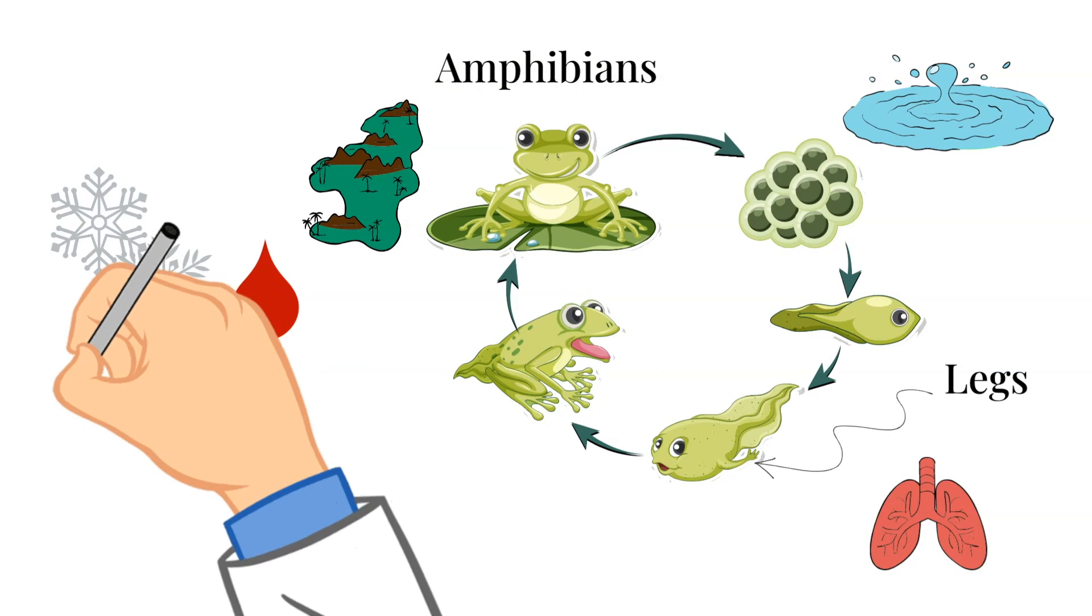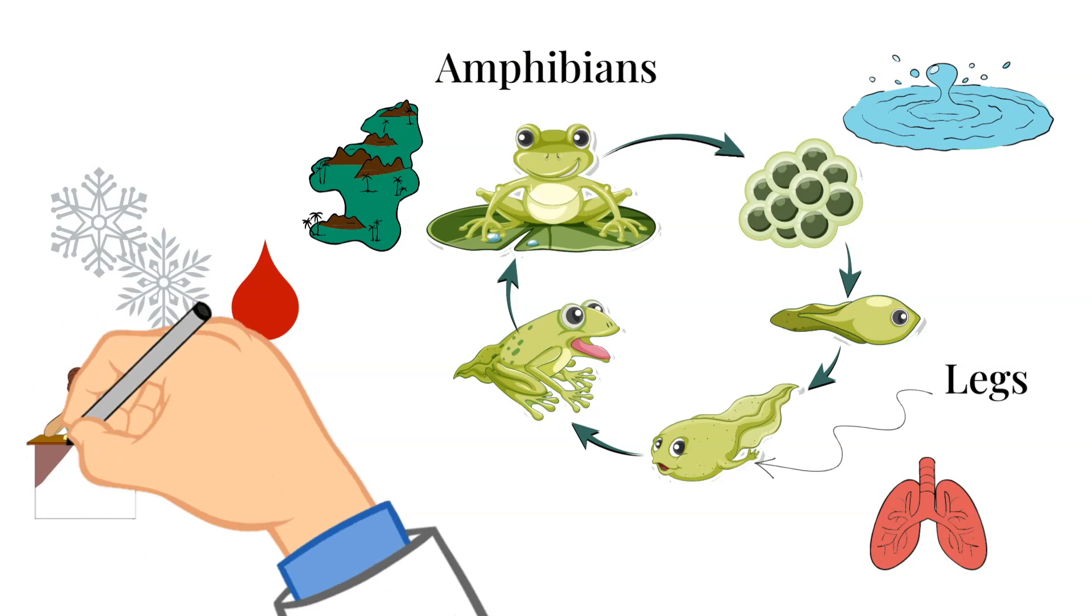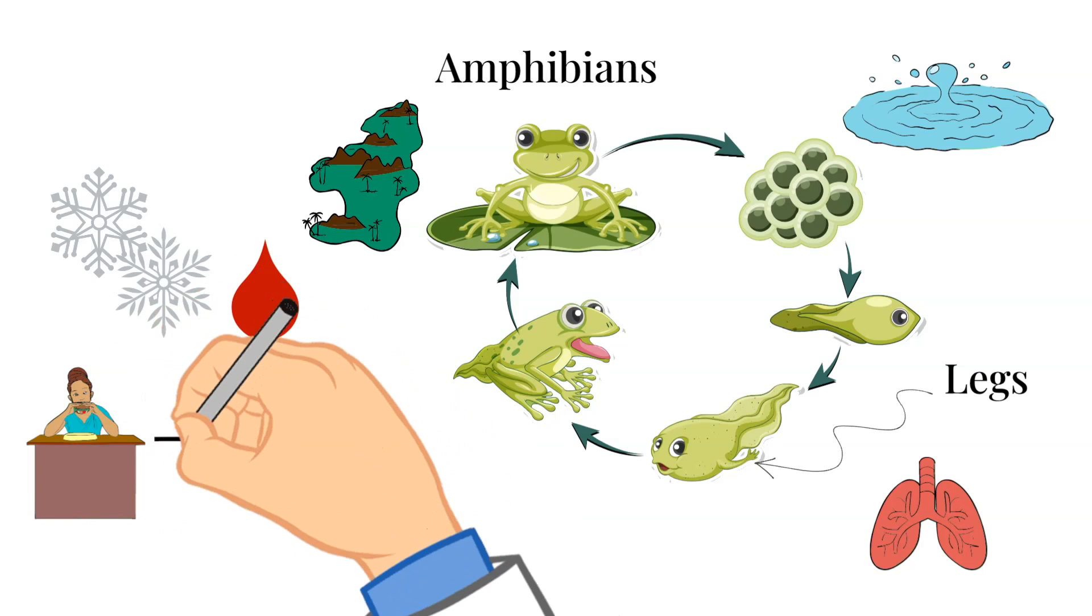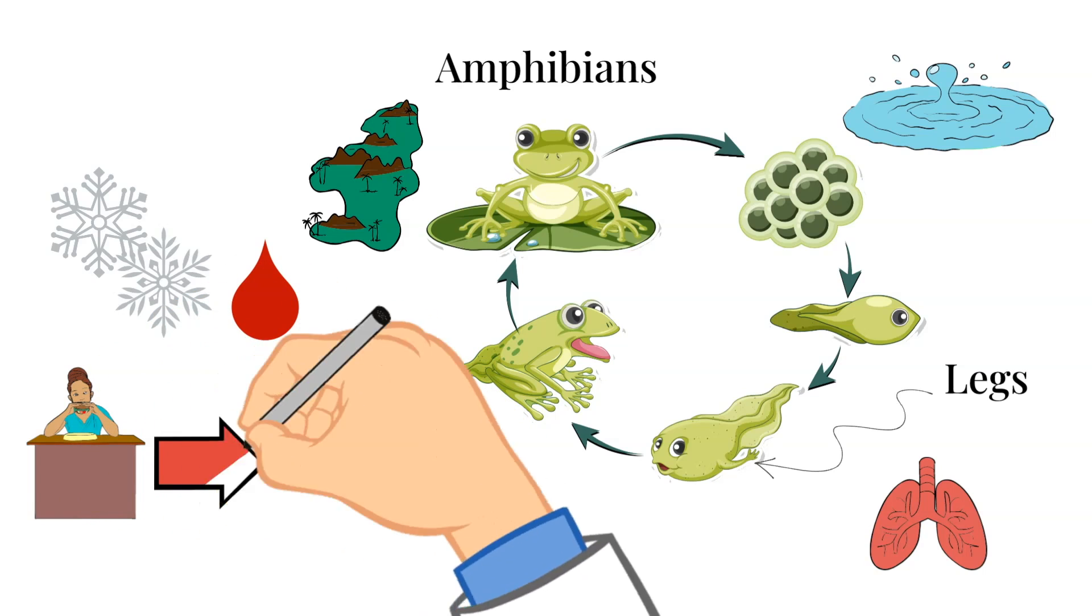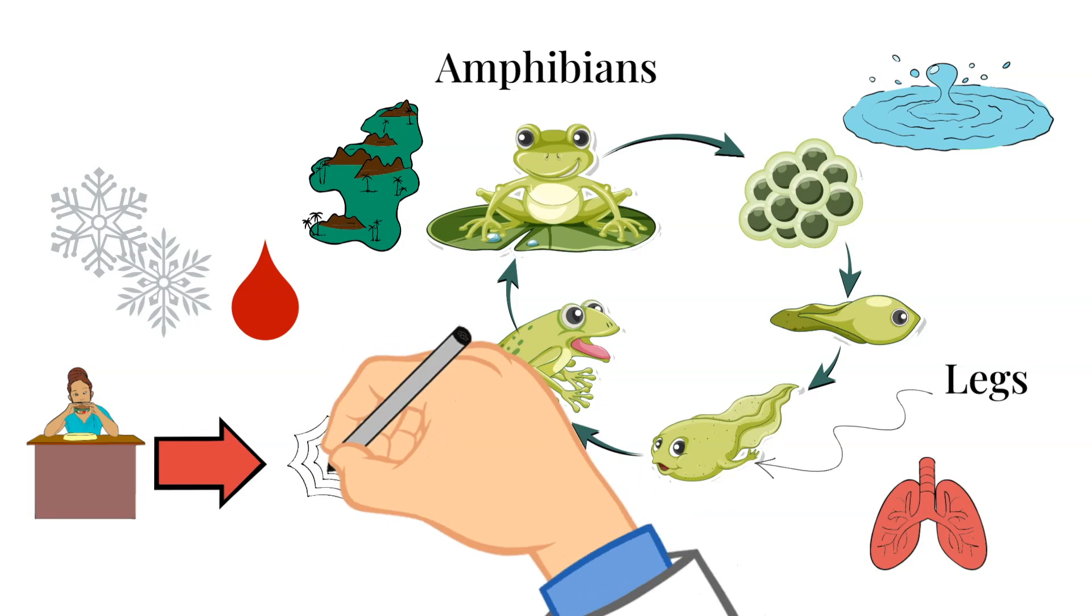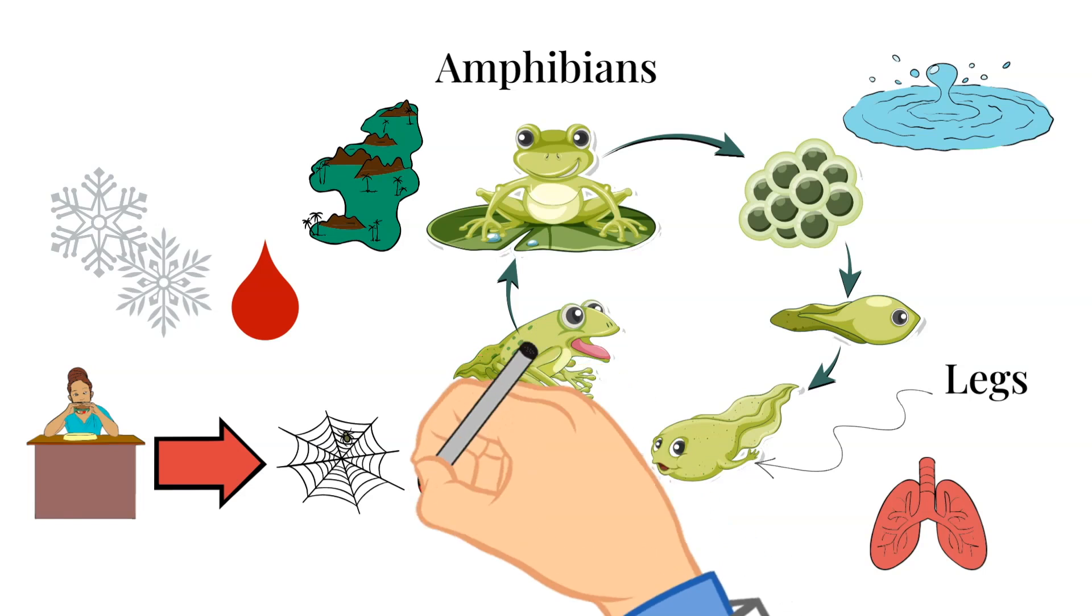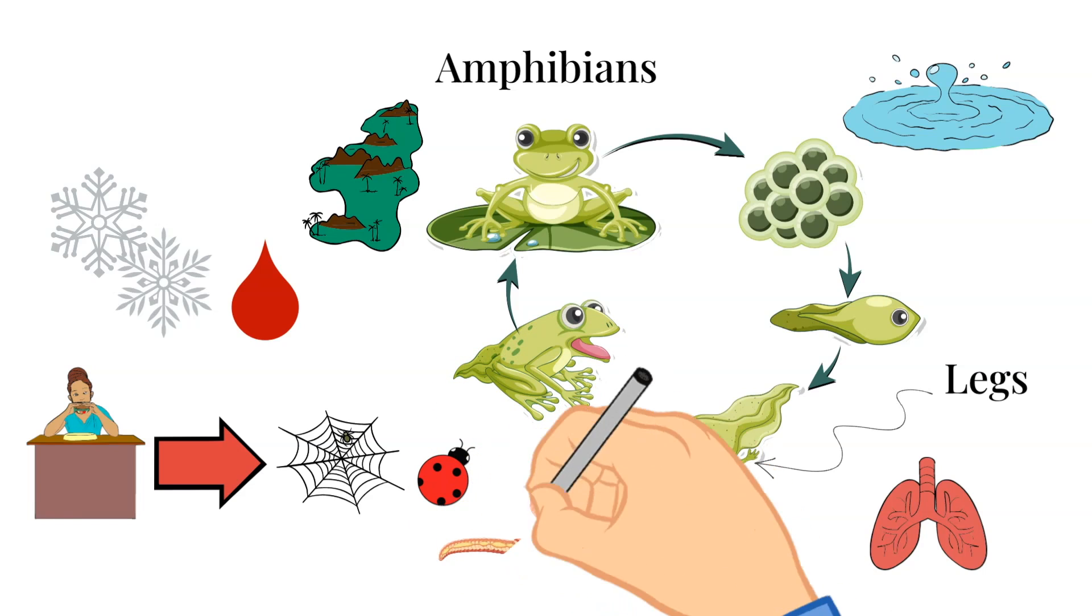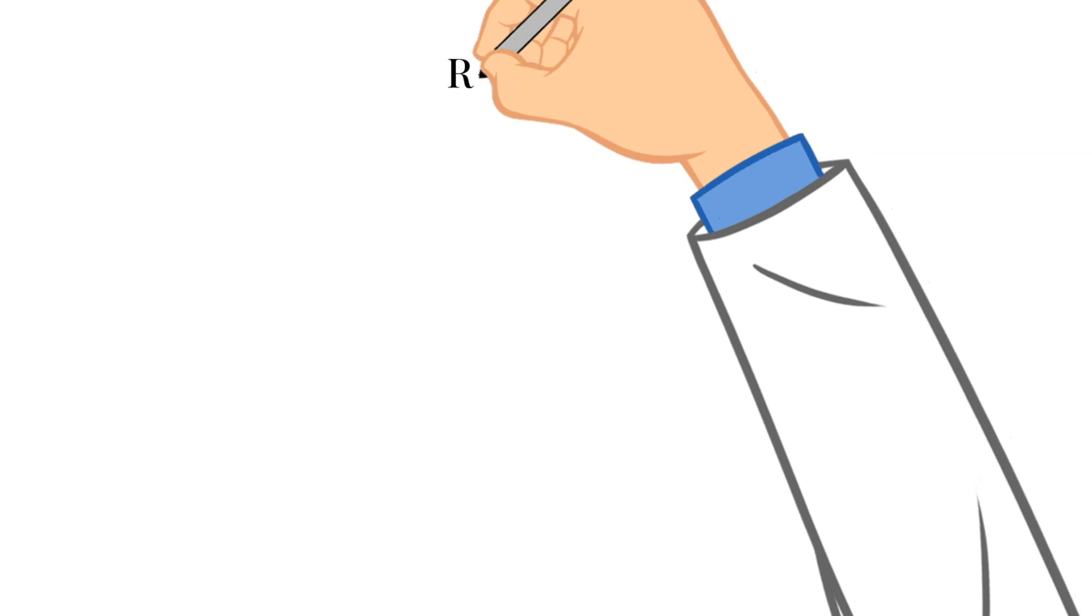The larva of many amphibians mostly just eat plants, but as they grow, they become carnivores. And because of this, we consider them to be predators. Frogs in particular will eat anything from spiders to beetles to worms.